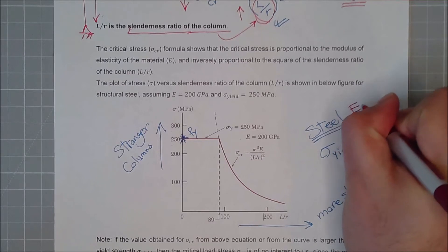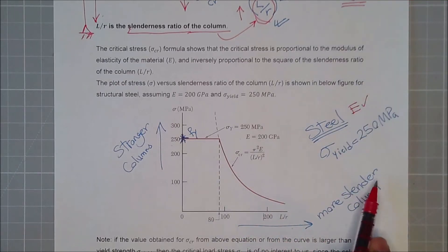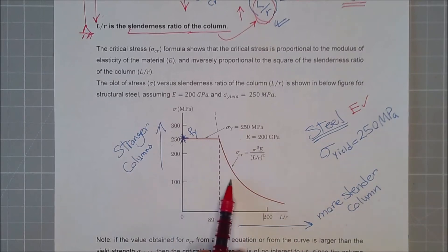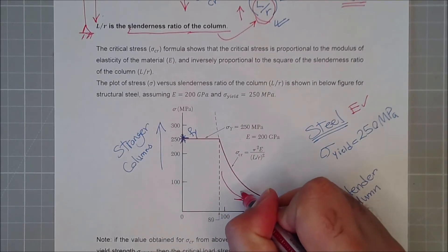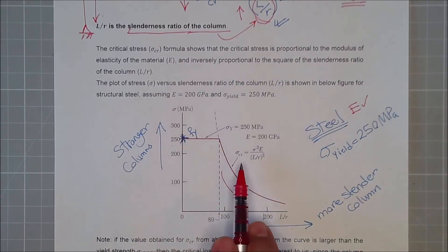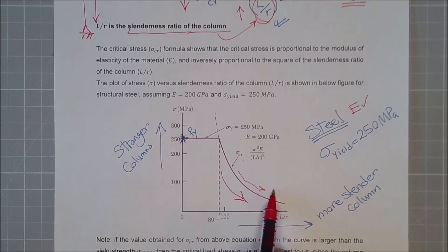All steel, the same E. Then I'm just increasing the slenderness ratio, meaning my columns are becoming more slender. As you can see, as my columns become slender, it's more susceptible to buckling, because the stress which the buckling happens is reducing and reducing and reducing.